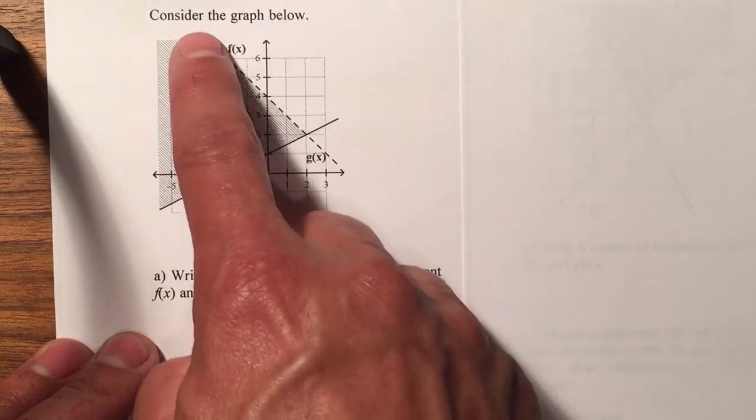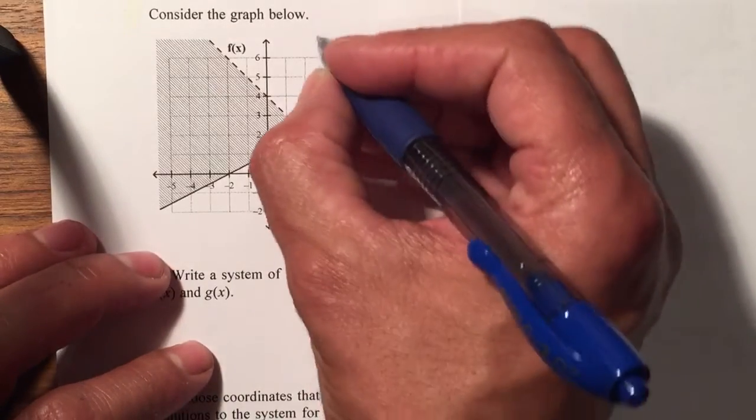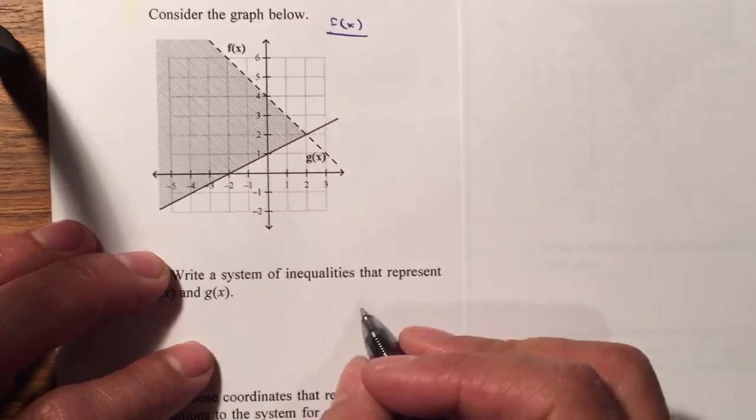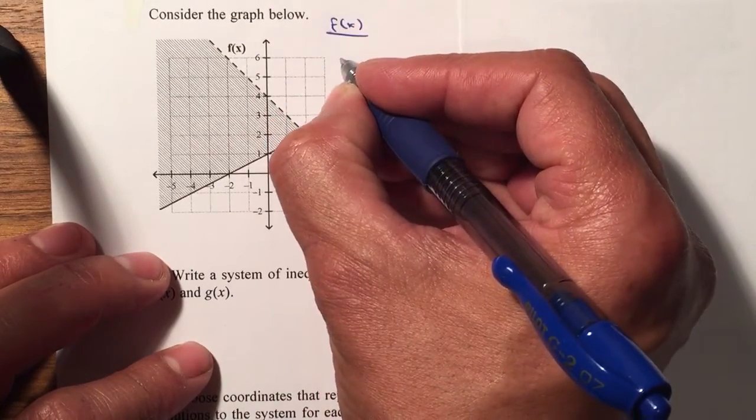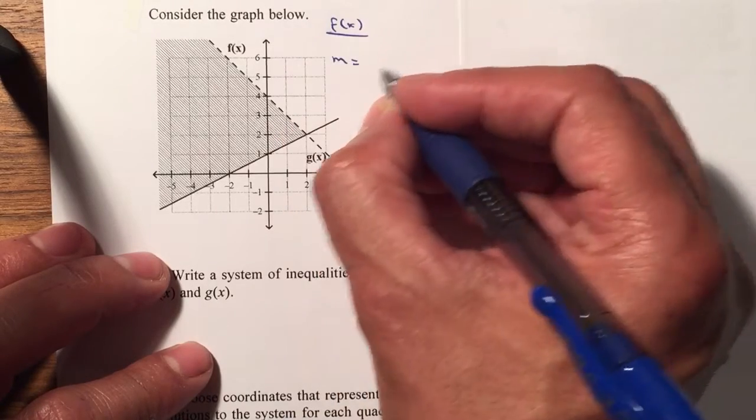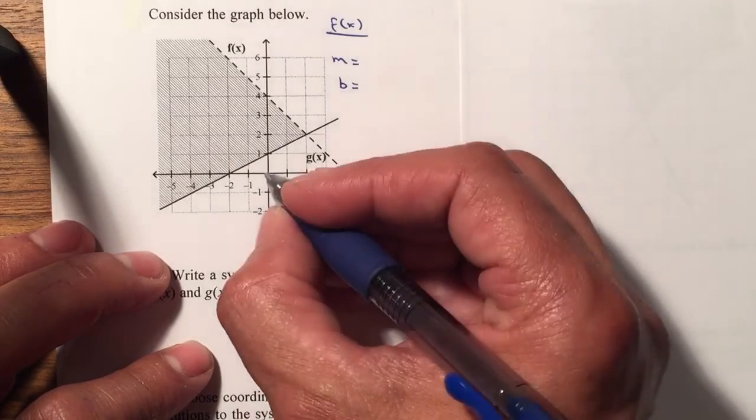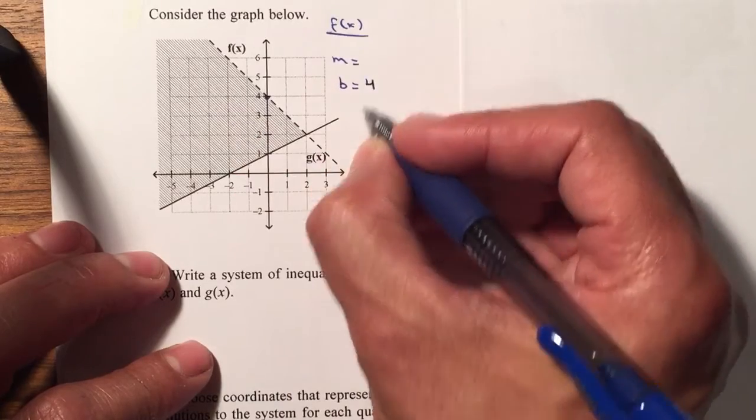So let's start with f of x. To be able to write an inequality for f of x, I need to find two things. I need to find my m, which is my slope, and my y intercept which is my b. So my y intercept for f of x is 4, that is b, positive 4.